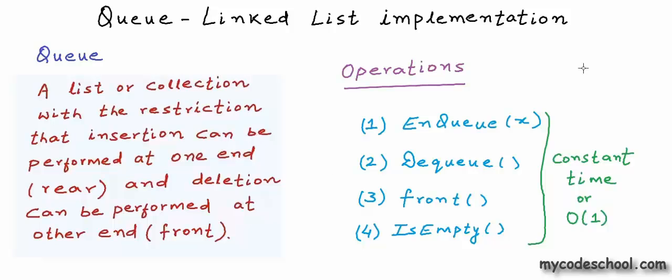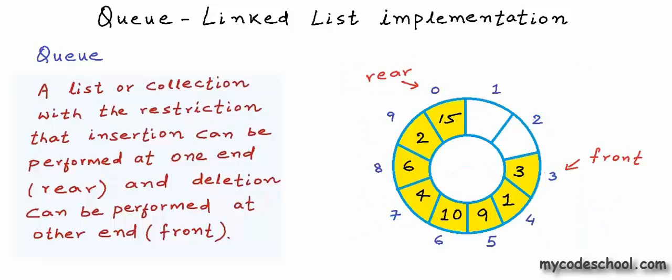The front function should simply return the element at the front of the list, and isEmpty should check whether the queue is empty or not. All these operations must take constant time — their time complexity should be O(1). When we were implementing a queue with arrays, we used the idea of a circular array.